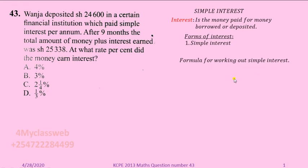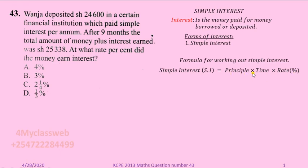When working out simple interest, there is a formula that is used. That formula is: you take the Principal, multiply by Time, and then multiply by Rate, which is in percentage. So: Simple Interest = Principal × Time × Rate (as a percentage).